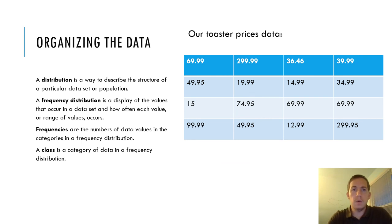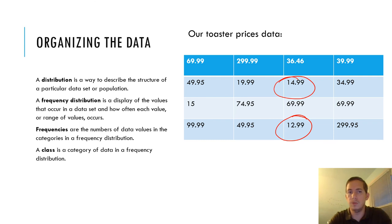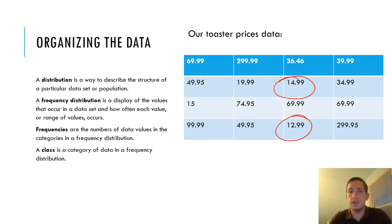Once we collect our data, we want to organize it. Looking at these toaster prices, it's difficult to say how much a toaster in 2020 costs — is it $69.99 or $299.99? If you look closely, some are $12.99, some are $14.99, which looks more approachable. The way to convey this data better would be to create a distribution rather than just a list of different prices.